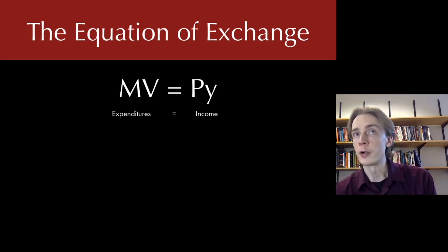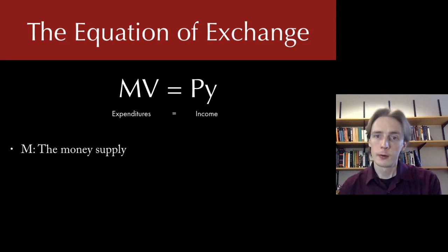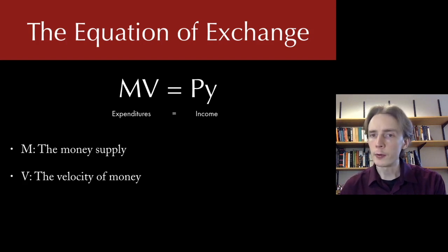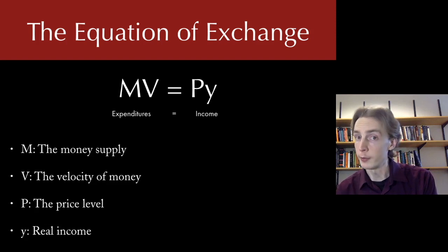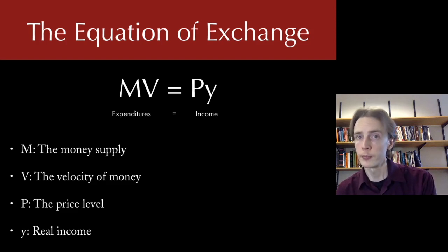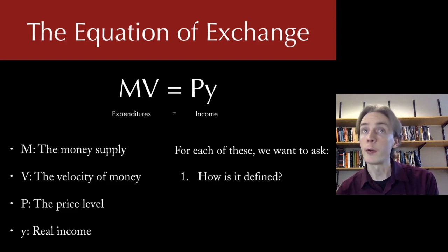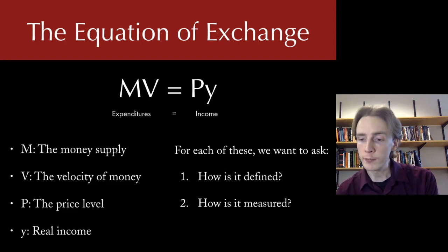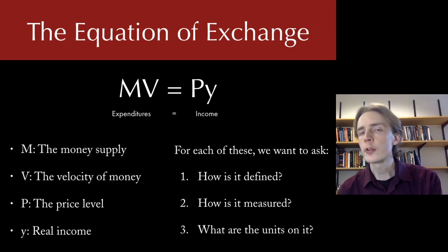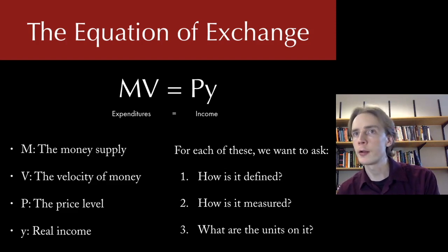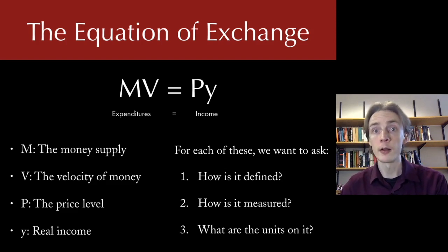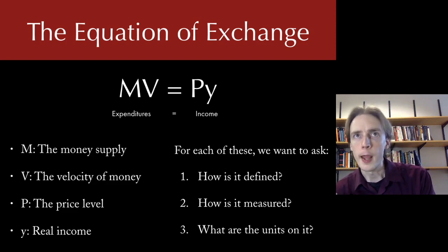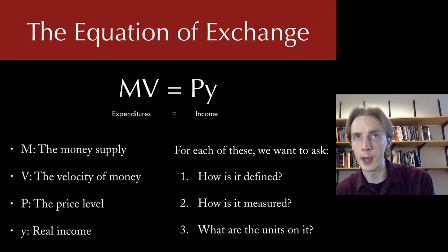Let's talk about what the variables mean. M is our money supply. V is our velocity of money. We've already seen the other two: P is our price level, and lowercase y — notice it's a lowercase y — is real income. For each of these we'll want to know how it's defined, how it's measured, and what the units are. We'll talk a lot about M, briefly about P and y since we've covered those, and then spend some time on velocity before tying it all together.